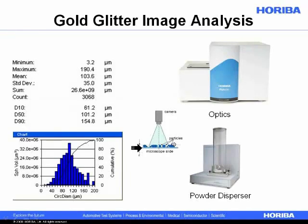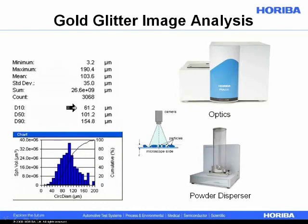The slide is brought into the instrument, and as the slide moves, we take images of the particles. For every image we take, we assign size and shape values to those particles. We used the PSA 300 to do a measurement of the same glitter powder. The results are fairly similar: a D90 near 150, a D50 at 100, and a D10 at 60 microns.